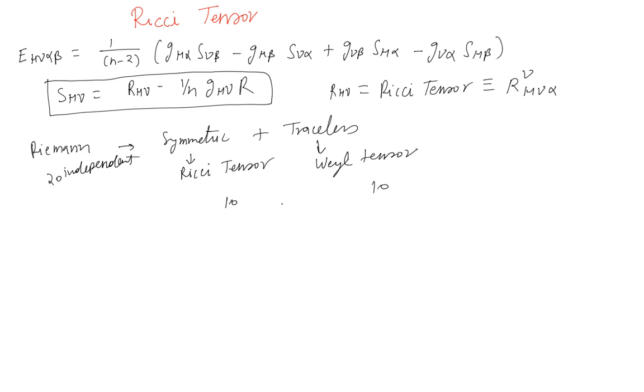We know that this is obtained by contracting the indices of the Riemann tensor itself. So if you contract indices you will lose information. The information which is contained in the Riemann tensor is lost. Some of it is lost when we go to Ricci tensor by contracting indices.